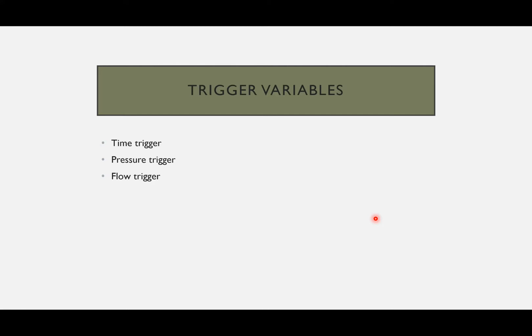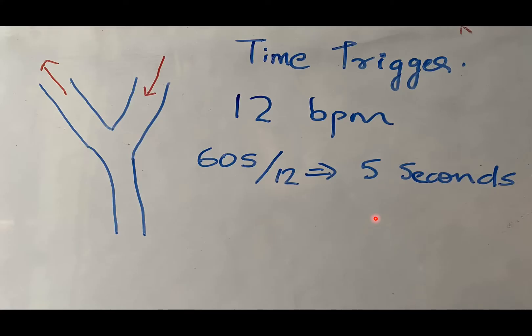These are known as phase variables because they depend upon the phase of the respiratory cycle — all of these initiate inspiration. So this is a phase variable that triggers the start of inspiration, making them trigger variables as well. Time trigger is a type of controlled ventilation in which the time-triggered breath is initiated and delivered by the ventilator when a preset time interval has elapsed.